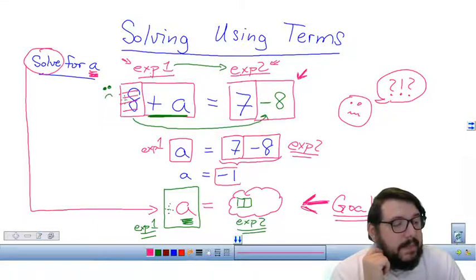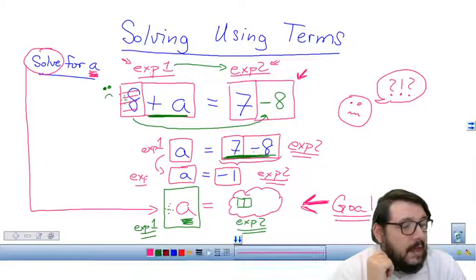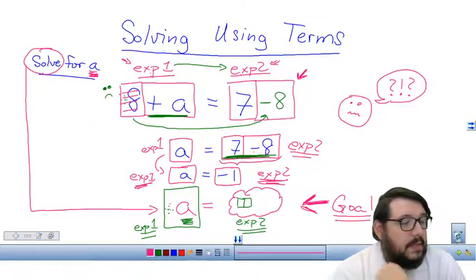So you're allowed to simplify this, because these are both constant terms. So you're just going to combine them by doing seven minus eight. You're going to do that little arithmetic problem right here. And that's going to simplify expression number two. So basically, what am I looking at now? Well, I've simplified expression number one. I've simplified expression number two.